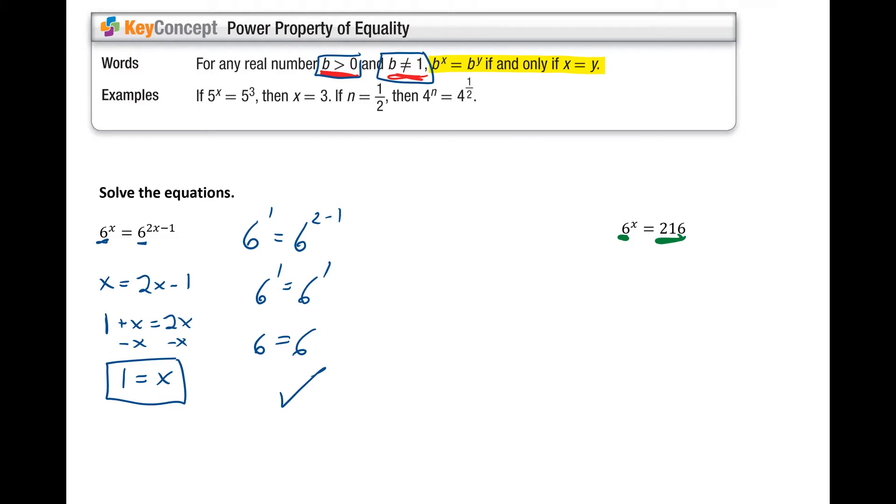That is, can I rewrite either number such that it is a base of 6? And this is where being familiar with numbers and your powers is useful, because 216, that is actually 6 to the third power. 6 times 6 is 36, and then times 6 is 216. So I rewrite 216 as 6 to the third power. Now my bases are the same. That means the exponents must be equal. And x equals 3.